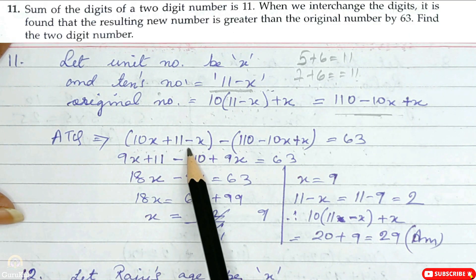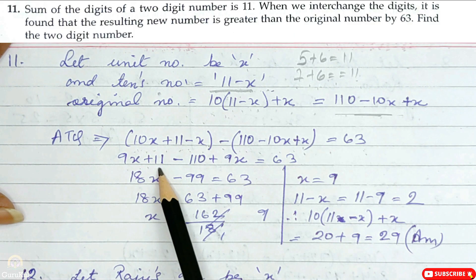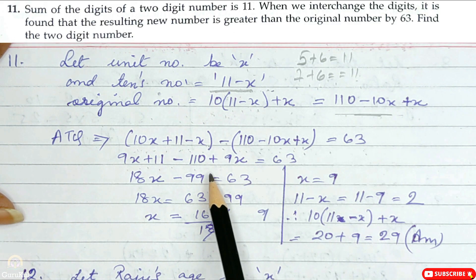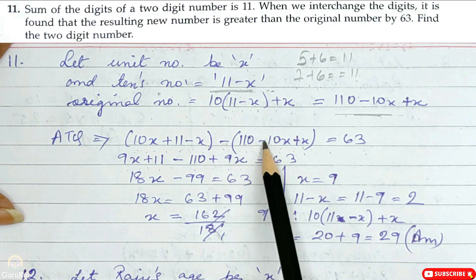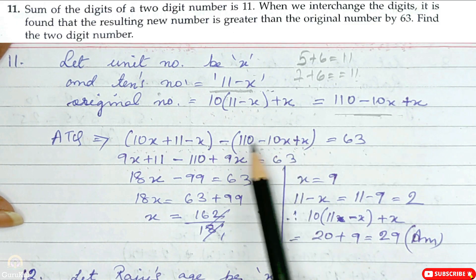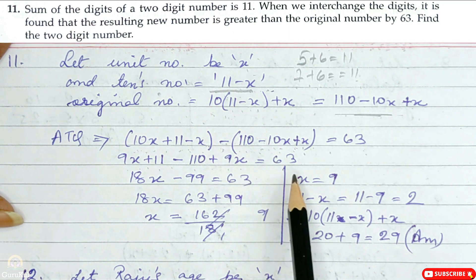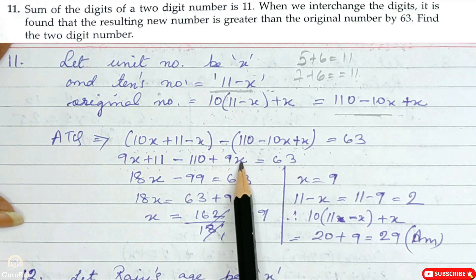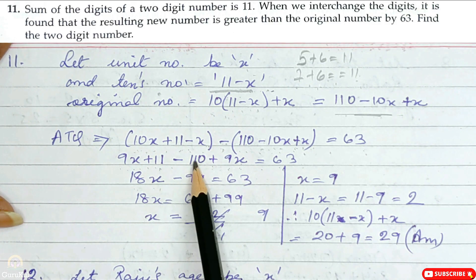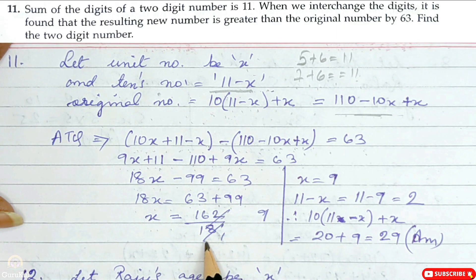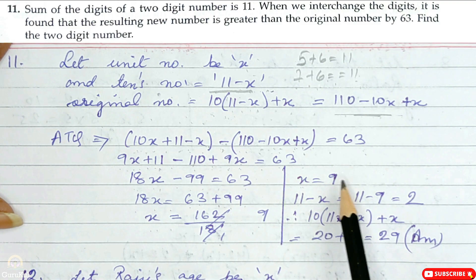Simplifying the bracket: 10x minus x gives 9x plus 11, minus (110 minus 10x plus x). When we open the bracket with negative sign, minus into minus gives plus, so minus 110 plus 10x minus x gives plus 9x. So 9x plus 11 minus 110 plus 9x is equal to 63. That gives 18x minus 99 is equal to 63, so 18x is equal to 162, and x is equal to 162/18 which is 9.